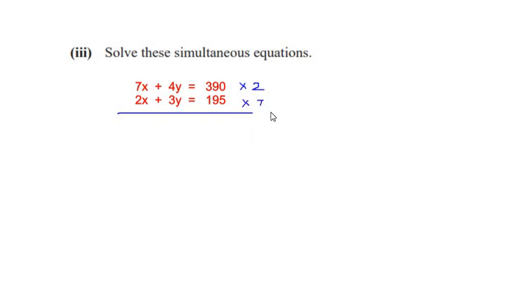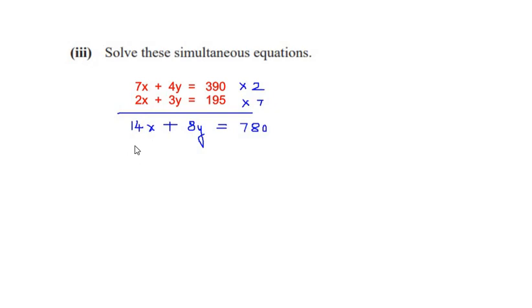We are cross-multiplying the coefficients. For the first equation: 2 times 7x gives 14x, 2 times 4y gives 8y, and 2 times 390 gives 780. Now multiplying the entire second equation by 7: 7 times 2x gives 14x, 7 times 3y gives 21y, and 7 times 195 gives 1365.